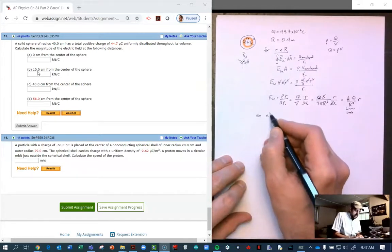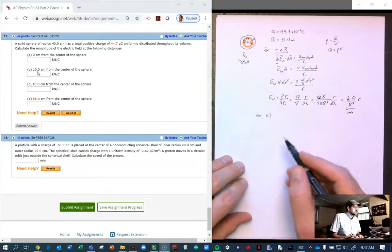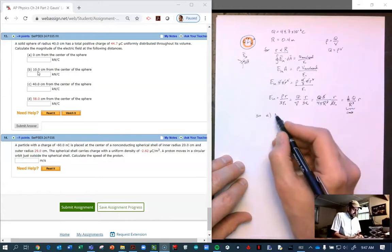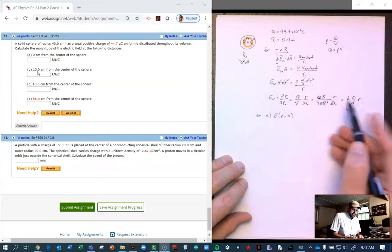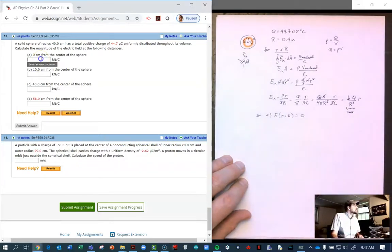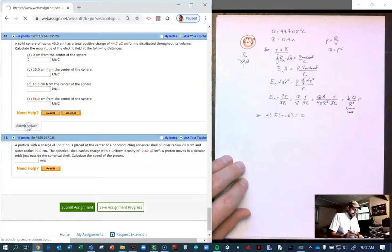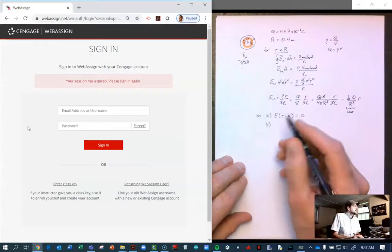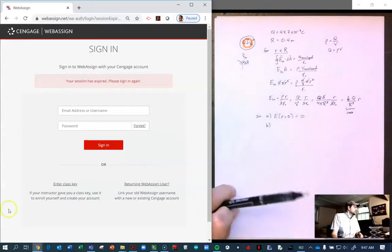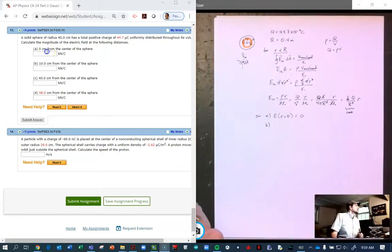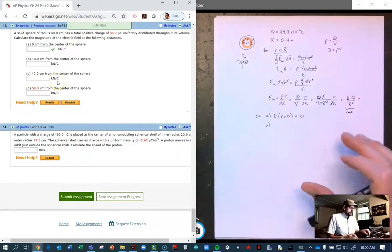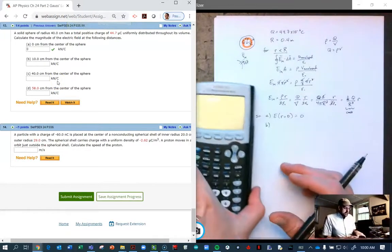Part A asks, what is the electric field when r equals 0 meters? When r equals 0, the electric field equals 0. Let me pause and log in. Okay, let's try again. Type in our 0. Submit the answer.